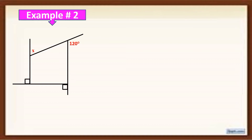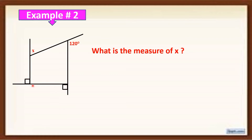Let's have example number 2. Using the given figure, what is the measure of x? Remember that the sum of all the different measures of the exterior angles of any polygon is 360 degrees. So if we add all the measures of the exterior angles in this figure, the total is 360 degrees. As you can see, these two angles — even though no measure is written — we know their measure is 90 degrees each because of the right angle symbol, and this one is 120 degrees.